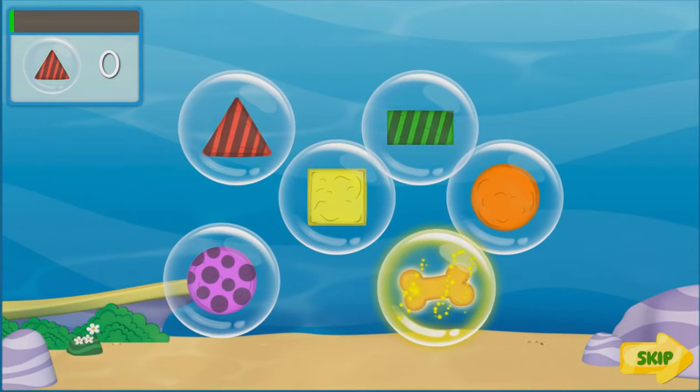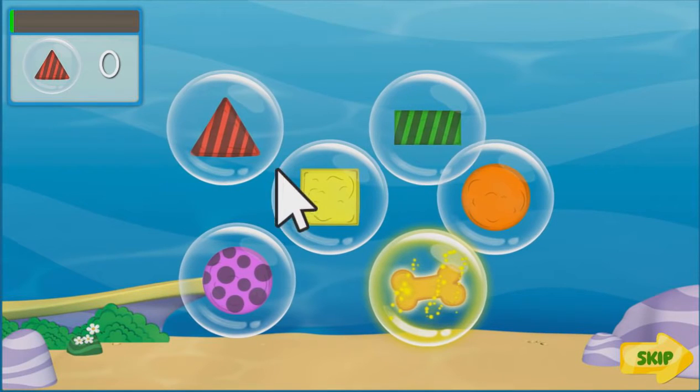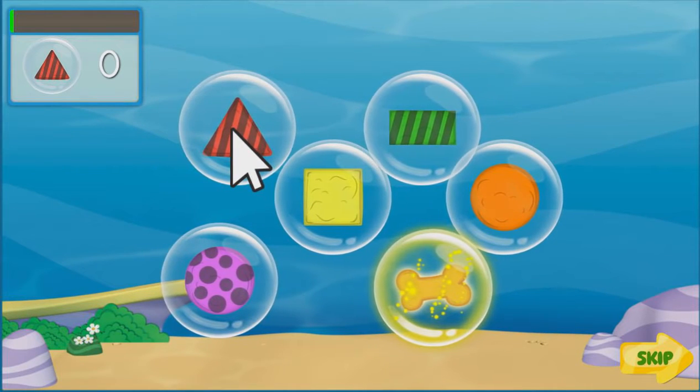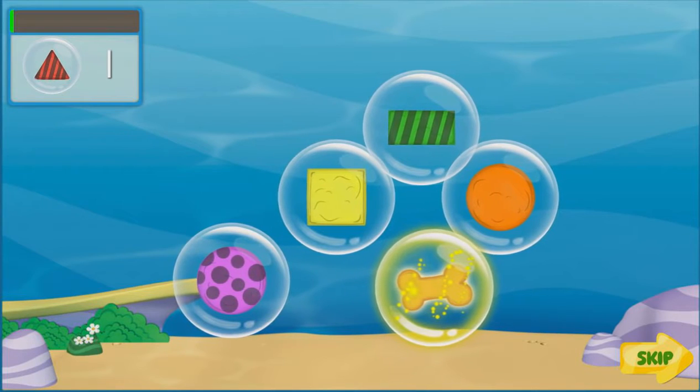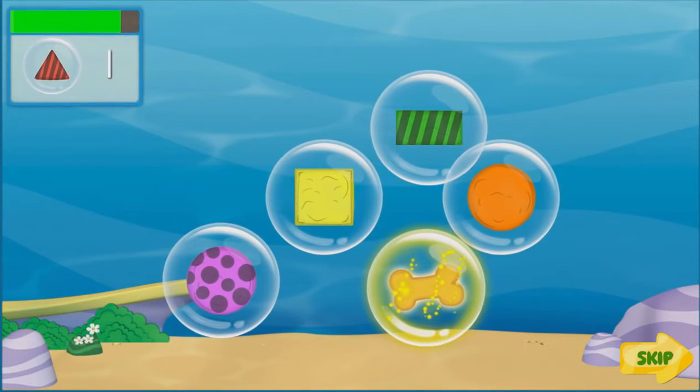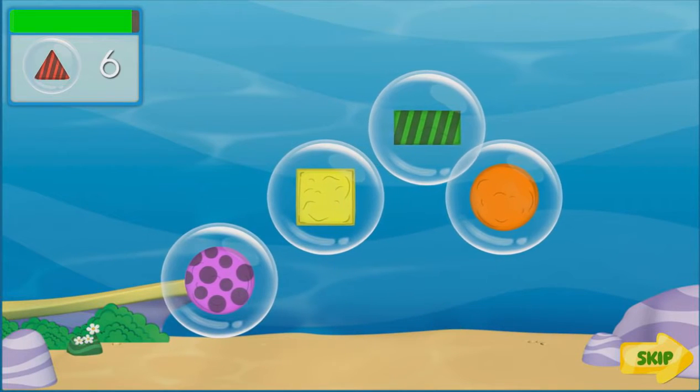Bubble Puppy's a good boy. He deserves some treats. But all the treats are trapped in bubbles. Click the bubbles with your mouse to get the treats Bubble Puppy wants. Click as many of the right treat bubbles as you can before time runs out. To get bonus points, collect all the bone-shaped treats.